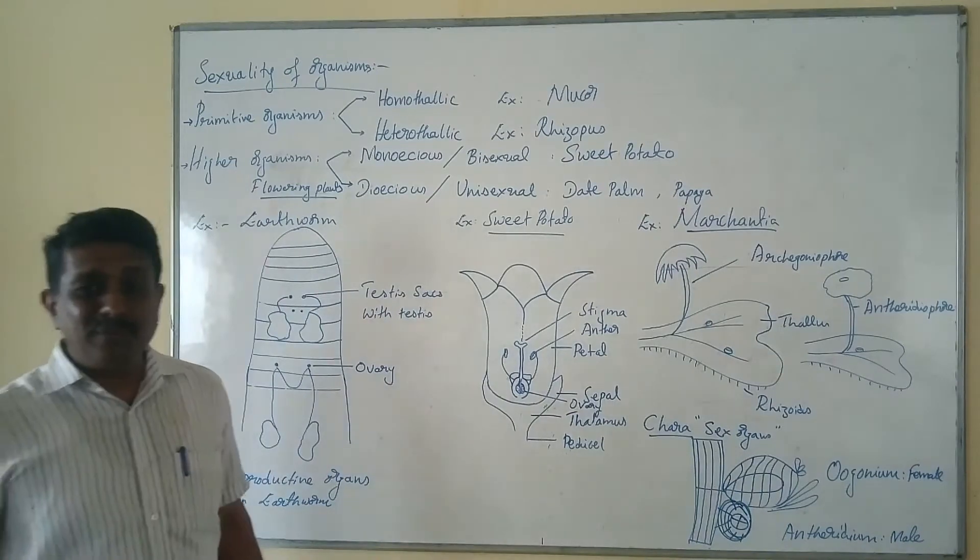In lower animals, you can find both the male and female sex organs present in the same individual; such animals are called hermaphrodite, or are also designated as monoecious or bisexual. You can find the hermaphrodite condition in case of tapeworm, sponges, and earthworm. In a single organism you can find both types of male and female sex organs; such organisms are purely designated as hermaphrodite.